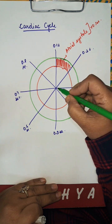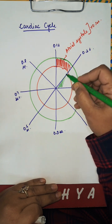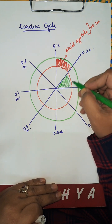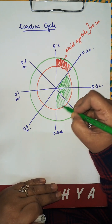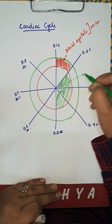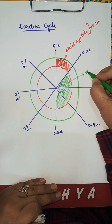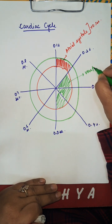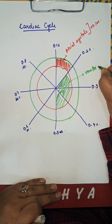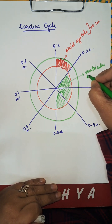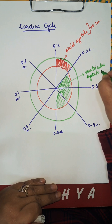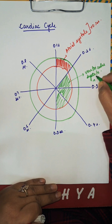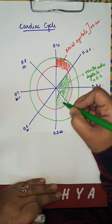Color the other three parts next to it — one part, two parts, and three parts. So this is ventricular systole, and it is 0.3 second.